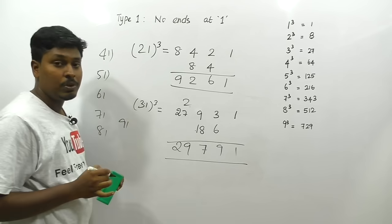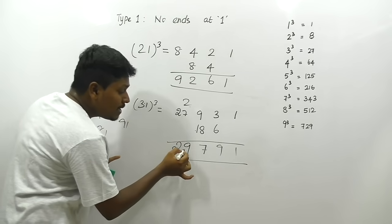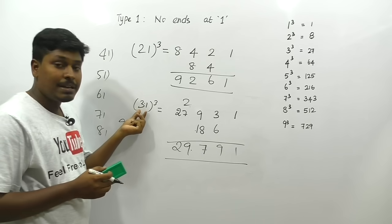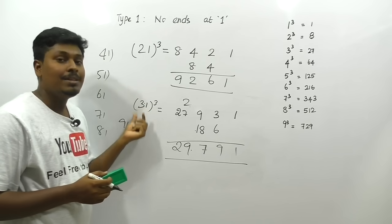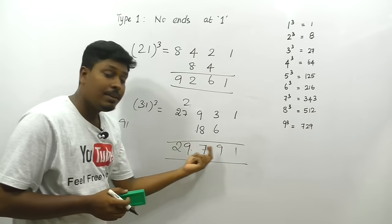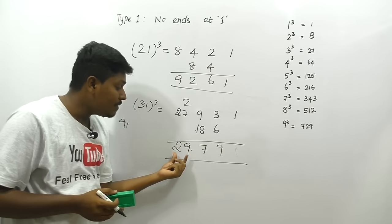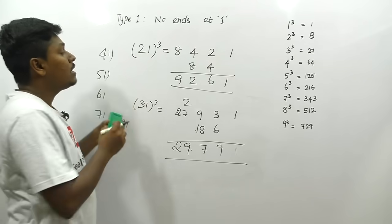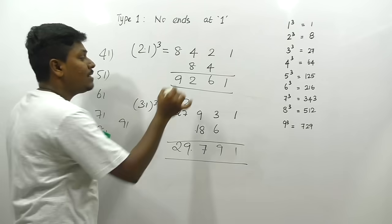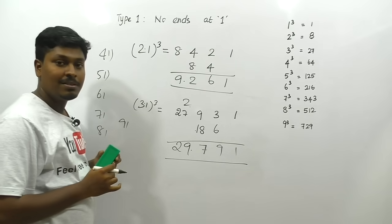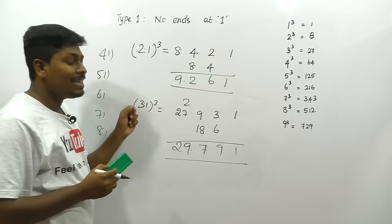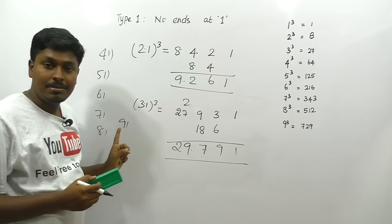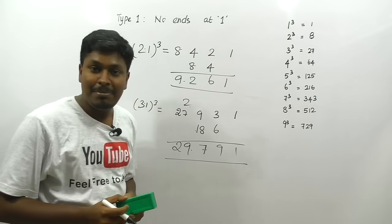For decimal applications in Type 2: 3.1³ = 29.791 (since 31³ = 29791, divided by 1000 moves decimal 3 places). Similarly, 2.1³ = 9.261 (since 21³ = 9261). This is one of the easiest methods to cube a number — practice all remaining numbers.